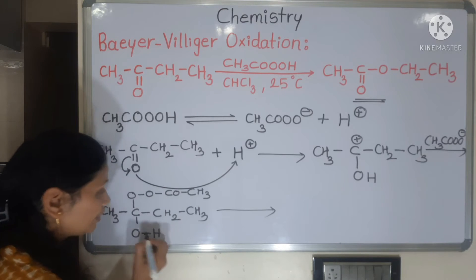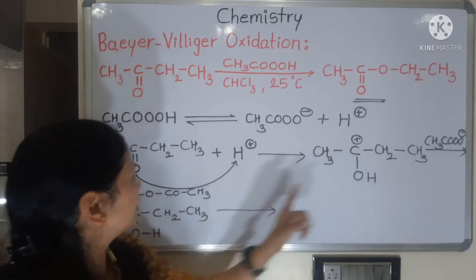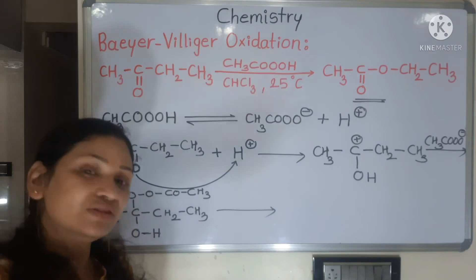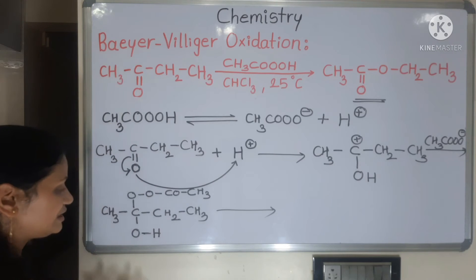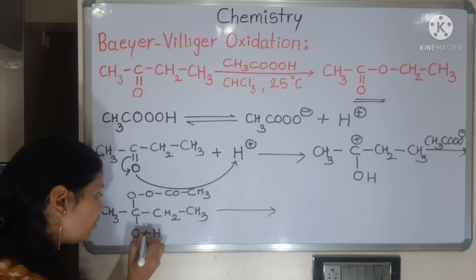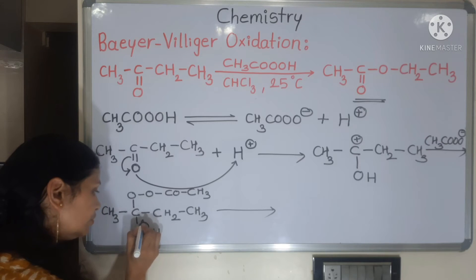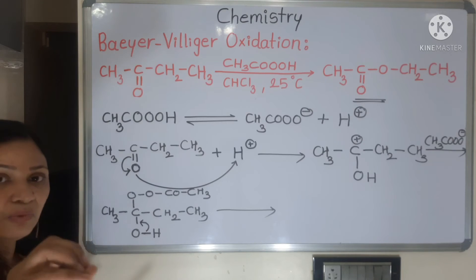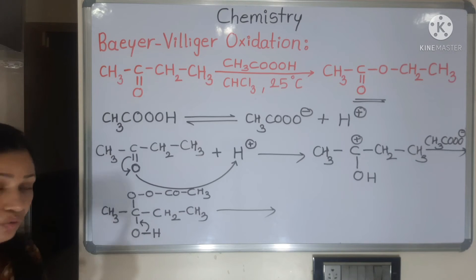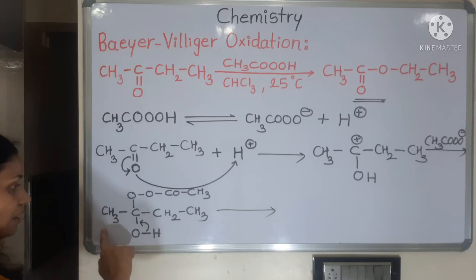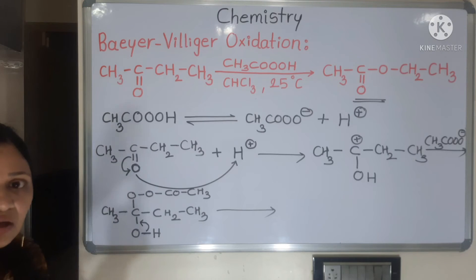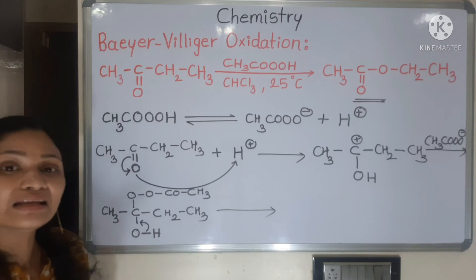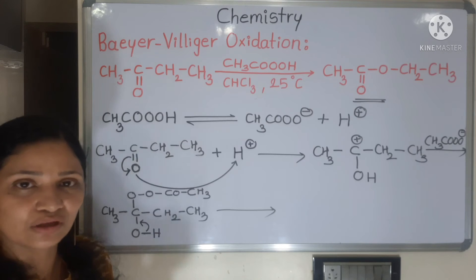Now how does this rearrangement start? The H⁺ that was added needs to be removed — since we used an acid, we remove that H⁺. So H⁺ leaves, returning its bond to carbon, forming C=O again. Now carbon has five bonds, so to balance this, one alkyl group from either side shifts to the oxygen. The alkyl group that shifts is the bulkier alkyl group.